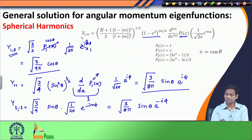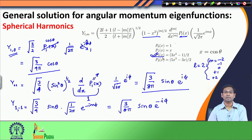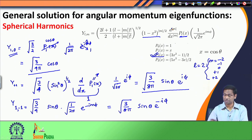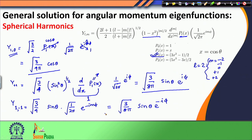I would suggest that you use this general formula and obtain the functional forms for l equals 2, which gives five different values of m: minus 2, minus 1, 0, plus 1, plus 2. In this case you will be using p_2(x) — the second-order Legendre polynomial. For m equals minus 2 or m equals minus 1 you differentiate p_2(x) two or one times respectively, and for m equals 0 you use p_2(x) directly, which is (3cos^2(theta) minus 1)/2.